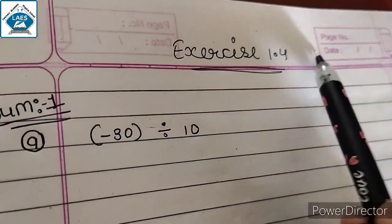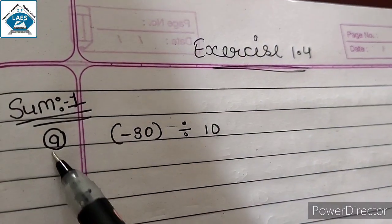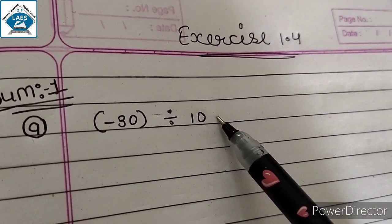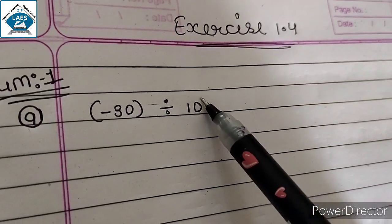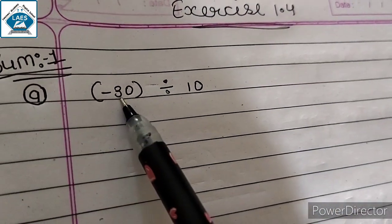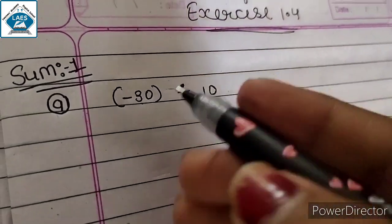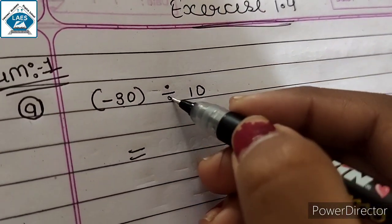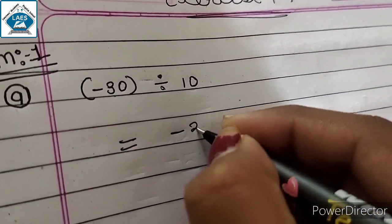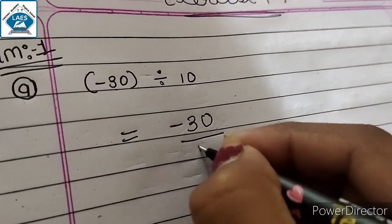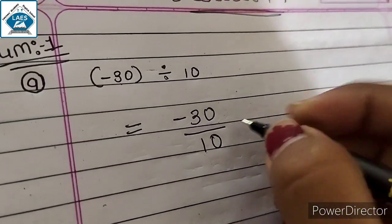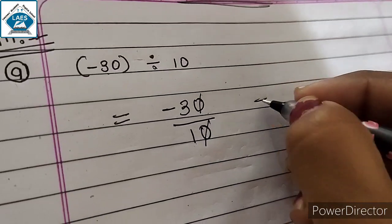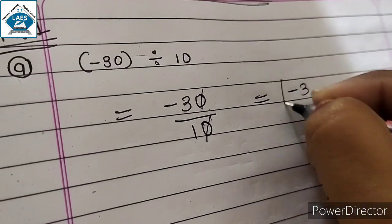Exercise 1.4, sum number 1, part A: minus 30 divided by 10. Division की sign है, it means divide करना है: minus 30 divided by 10. We cancel the zeros: minus 30 divided by 10 gives answer minus 3.